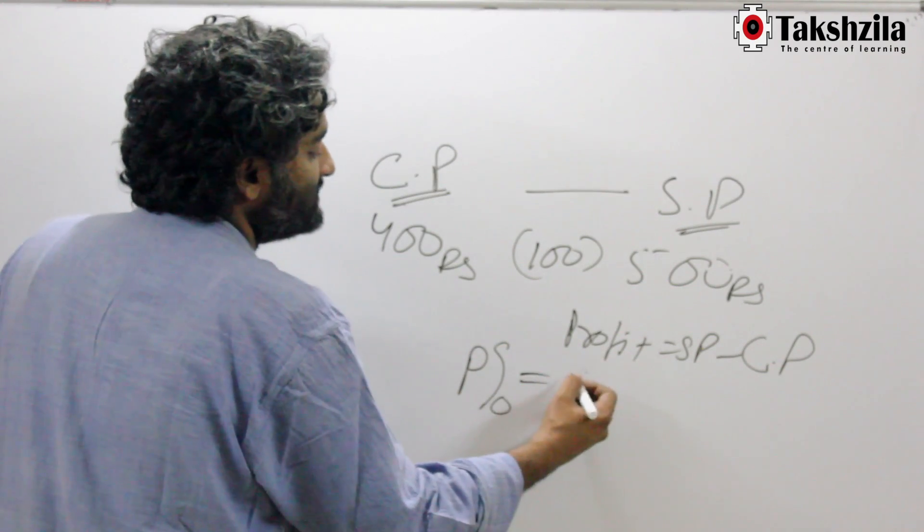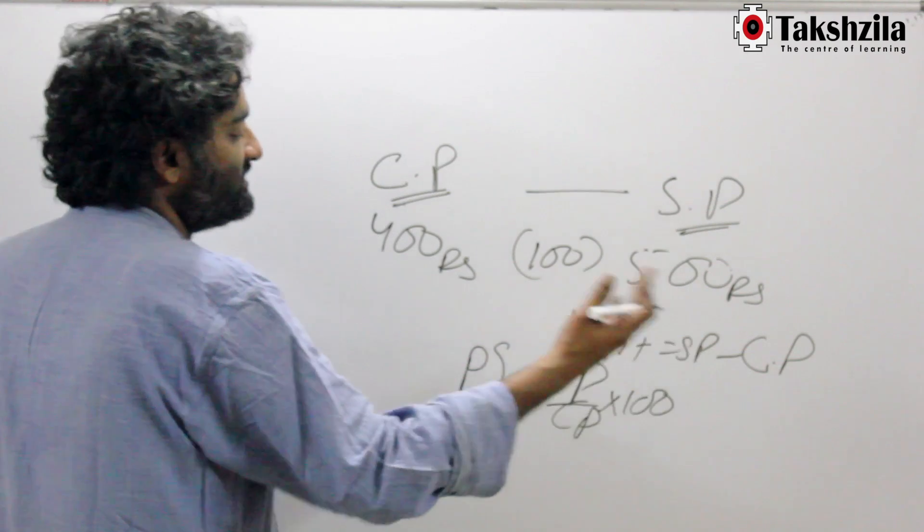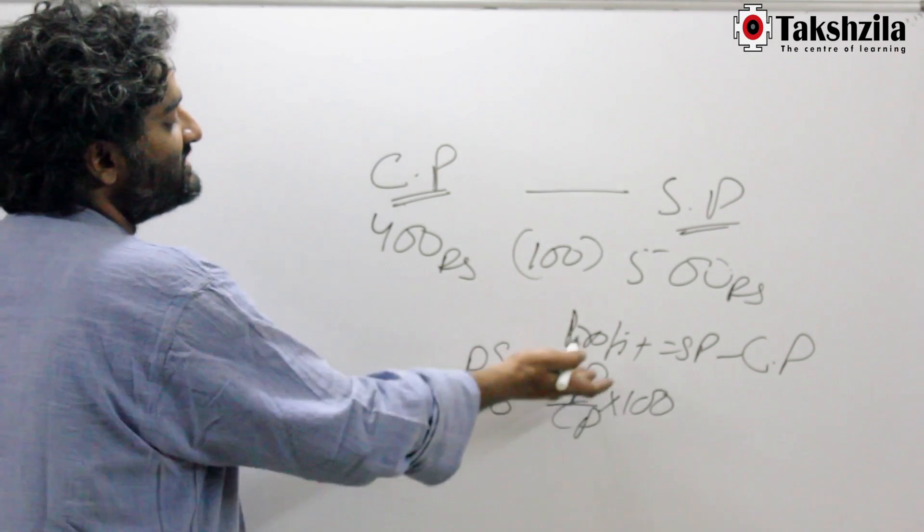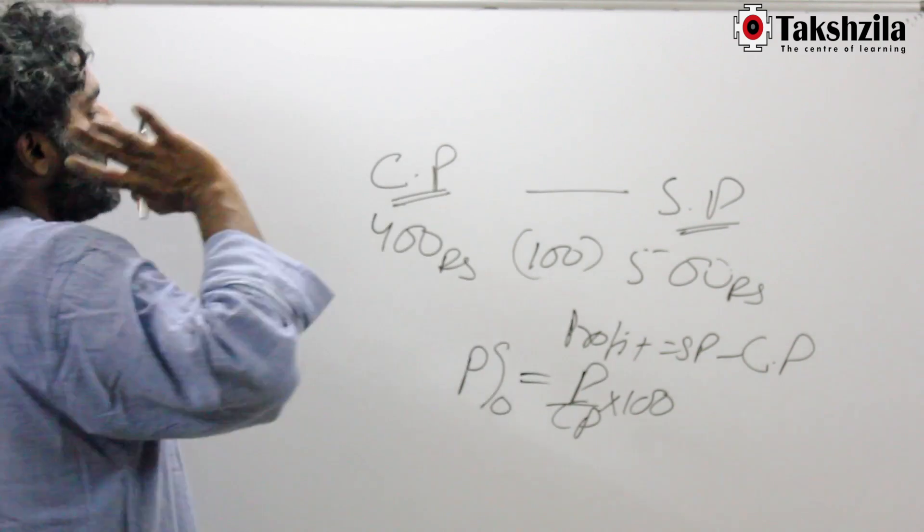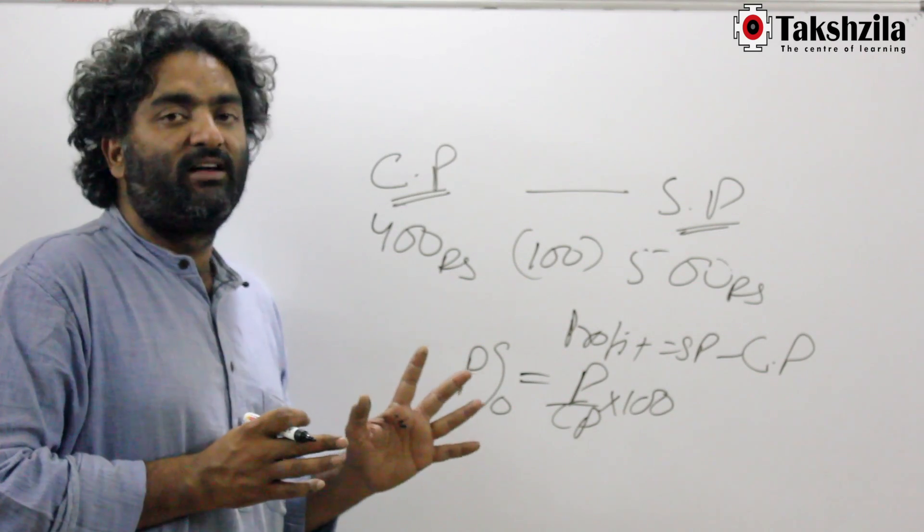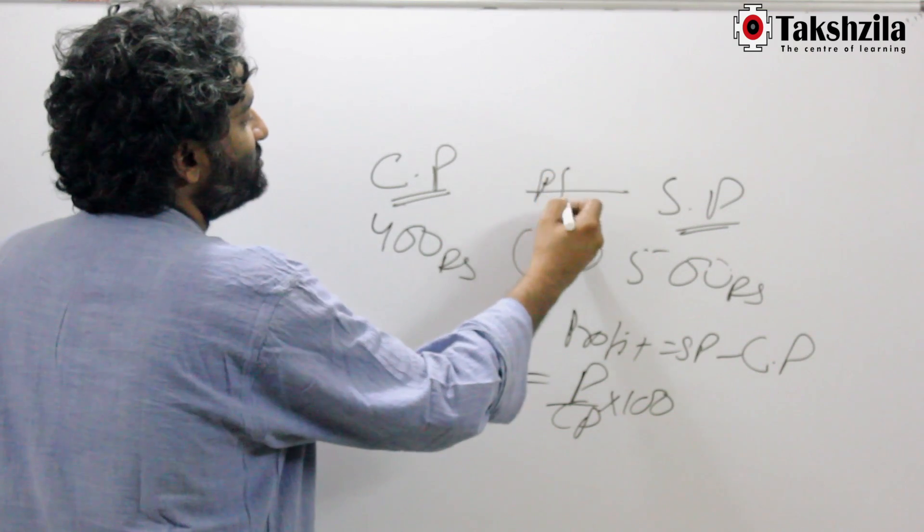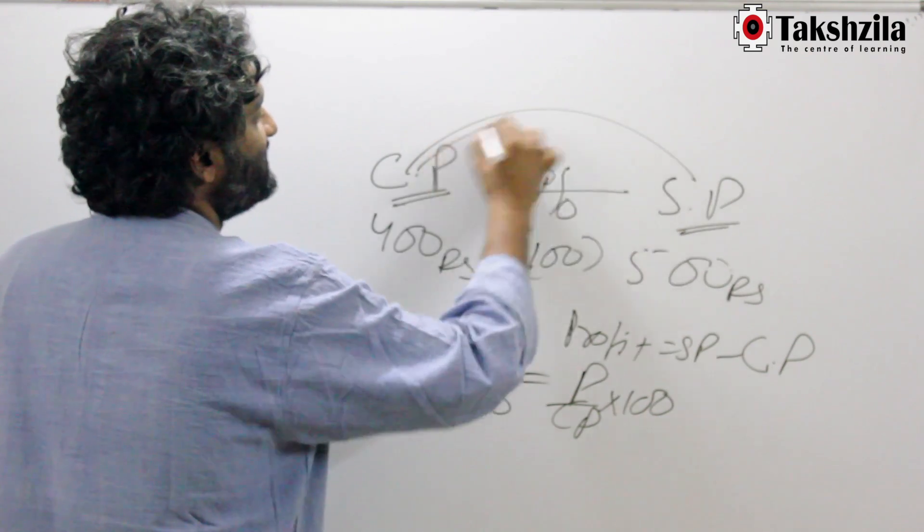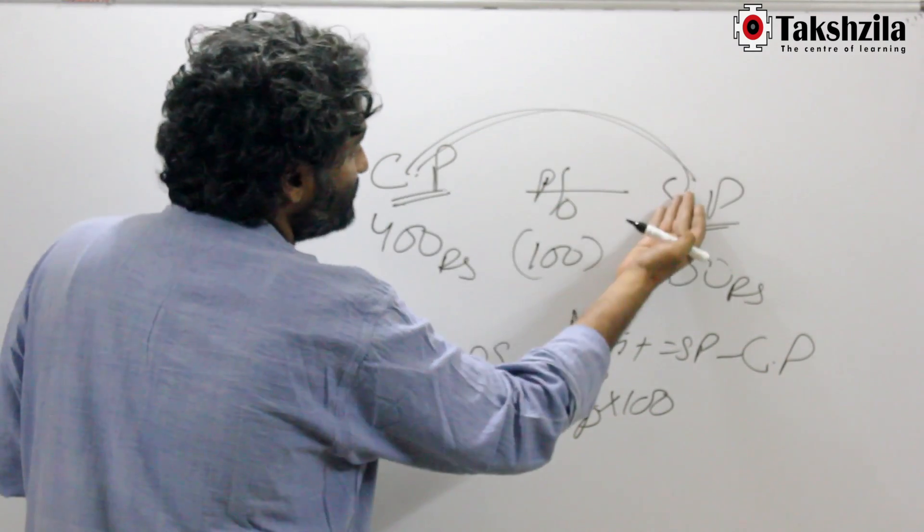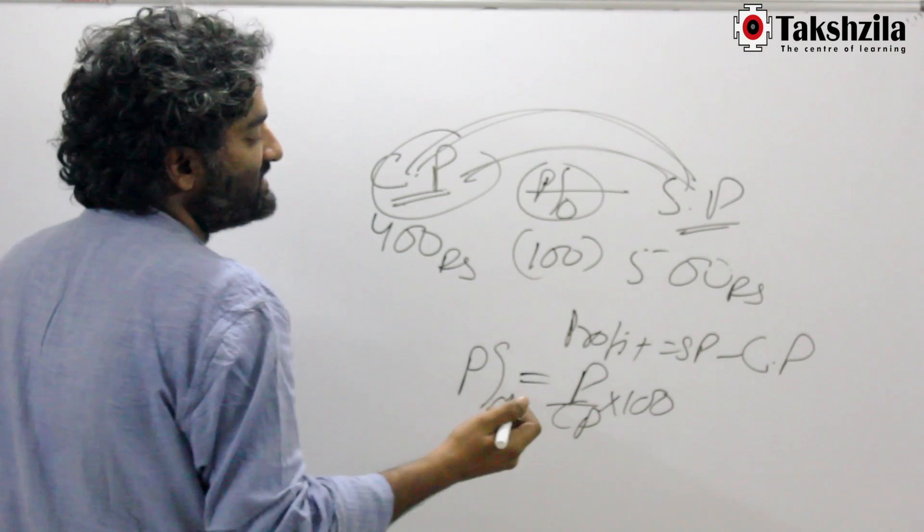So profit percentage is profit upon CP. You want to multiply it by 100 in the general form, you can do that. Or I know when I say profit percentage and it's a relationship between P and CP, I know I have to put it in numerator denominator form. What the profit percentage is also doing, it is connecting CP and SP because when I add the profit to the CP, I get to the SP. So if I know this and I know this, I will be able to jump to the selling price.